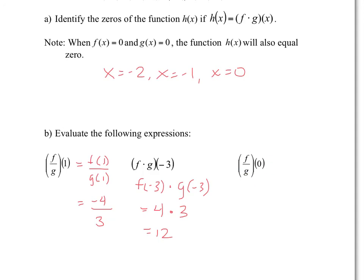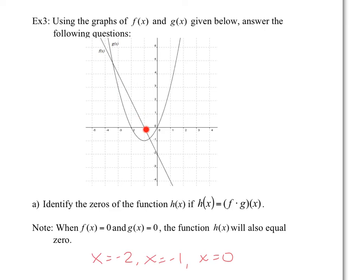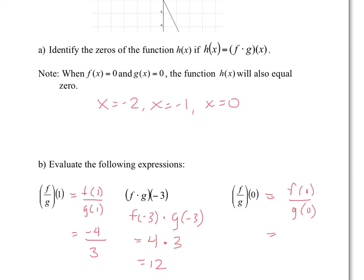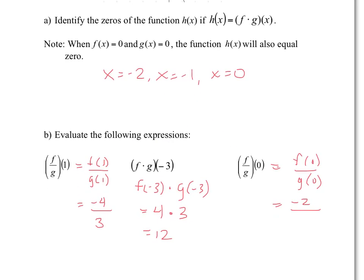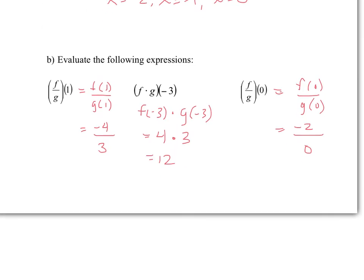And last one, f of g of zero, well this is again very similar to this notation. You have f of zero divided by g of zero. Okay, and f of zero, well f of zero is negative two. Right, at x equals zero, is negative two. So you'd have negative two. And g of zero, same value, is zero. So notice, I hope you guys noticed something right here, this cannot happen. You cannot divide negative two by zero.